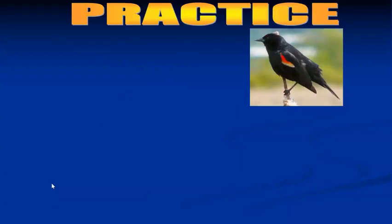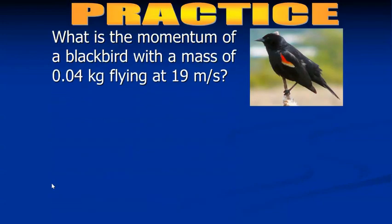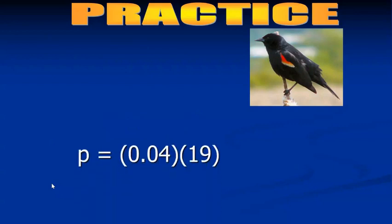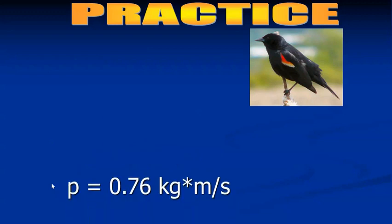Okay, so here's our example. What is the momentum of a blackbird with a mass of 0.04 kilograms flying at 19 meters per second? So it tells us the mass and the velocity. So all we have to do is multiply mass and velocity. So mass was 0.04, velocity was 19, you just multiply those together.